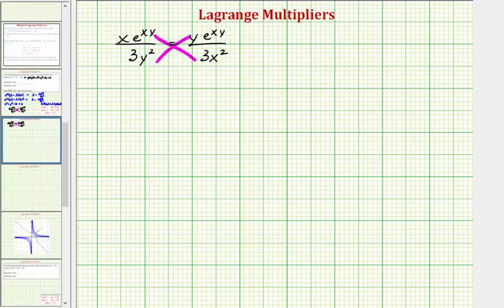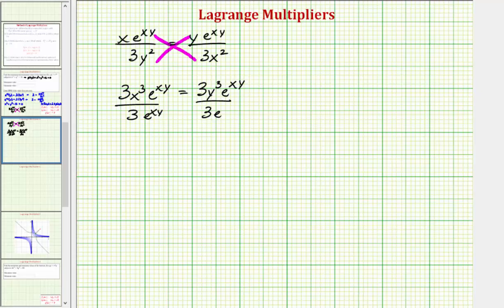Cross-multiplying, we'd have 3x cubed · e to the xy equals 3y cubed · e to the xy. Notice both sides contain a factor of 3 as well as a factor of e to the xy, so we divide both sides by 3·e to the xy. Simplifying, 3 divided by 3 and e to the xy divided by e to the xy both simplify to one, leaving us with x cubed equals y cubed.